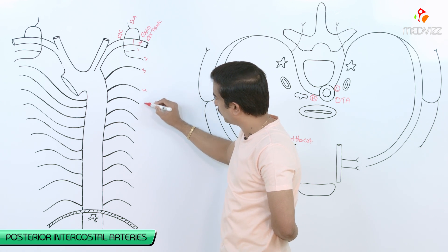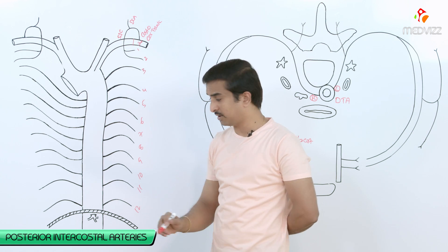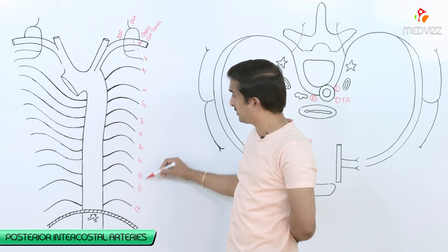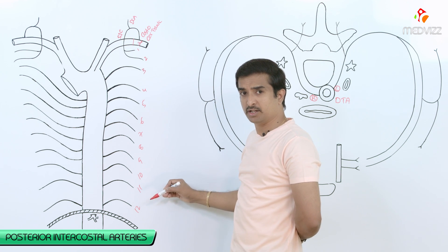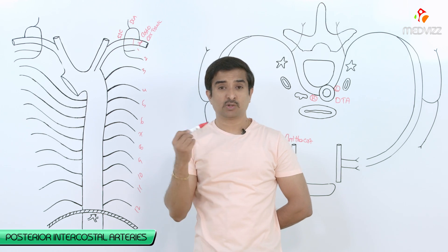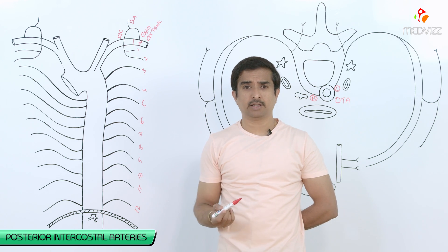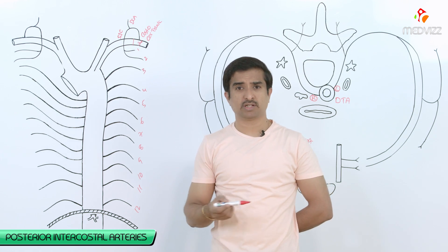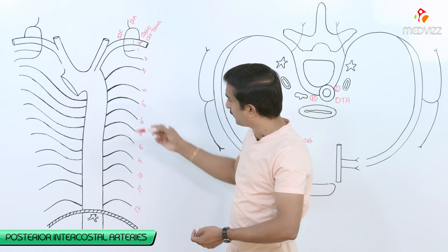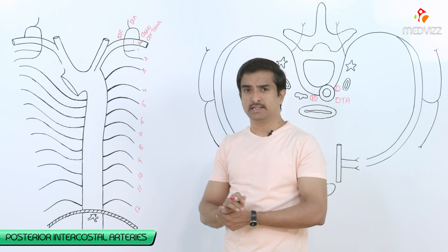From the third through the eleventh intercostal spaces, the posterior intercostal arteries arise from the descending thoracic aorta. The twelfth vessel is called the subcostal artery — we cannot call it an intercostal artery. So we have totally eleven posterior intercostal arteries supplying the greater part of the intercostal spaces, while the first and second spaces receive supply from the superior intercostal artery, a branch of the costocervical trunk.